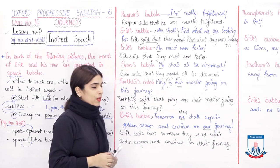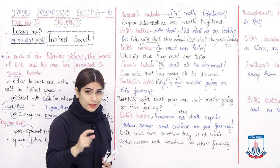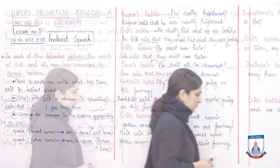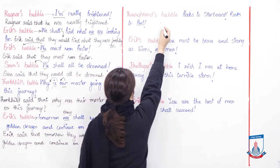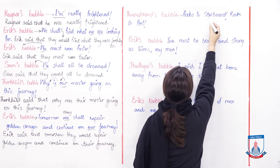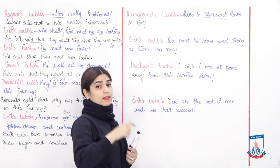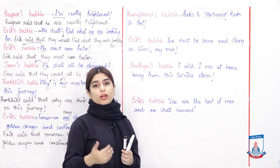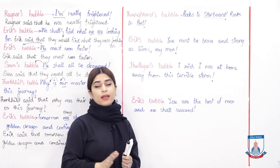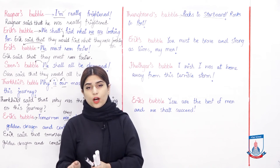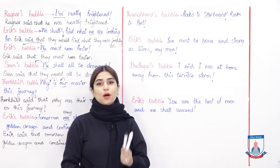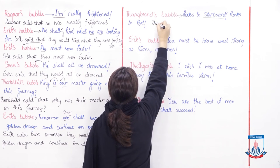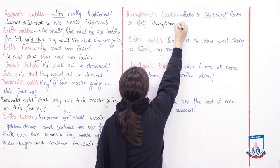Have you all filled this in with me so far? Now let's do the remaining three direct speeches and quickly change them to indirect in the box. Fangbrand's bubble: 'Rocks to starboard.' We discussed what starboard means — inside ships, left and right direction terms are not used. The captain or rower uses specific names: right-hand side is called starboard side, and left-hand side is called port side. So we write: Fangbrand said that rocks to starboard.